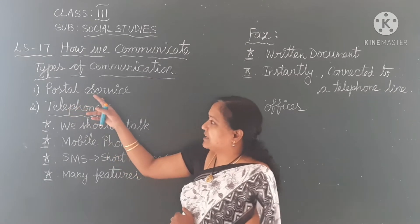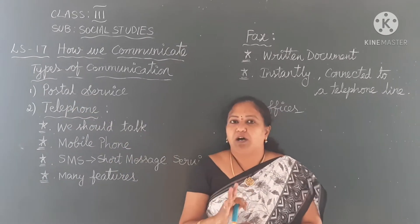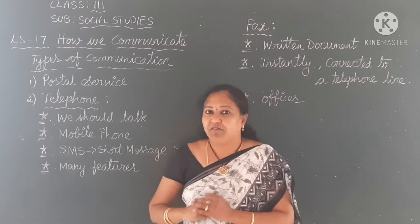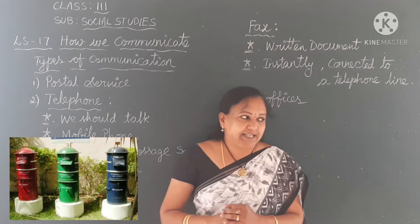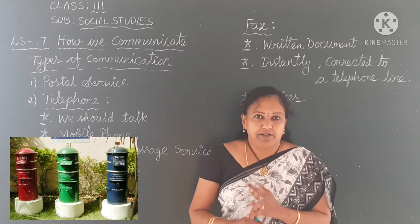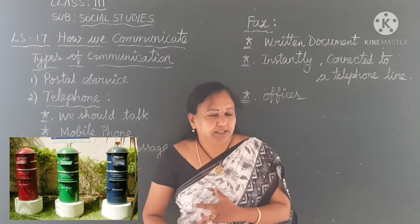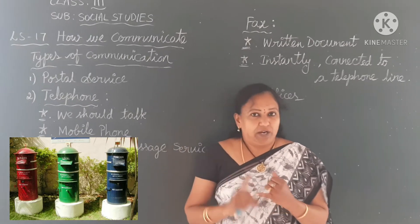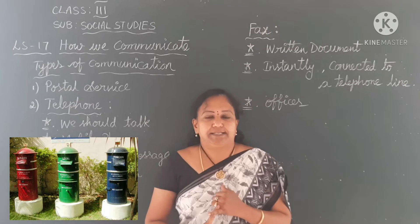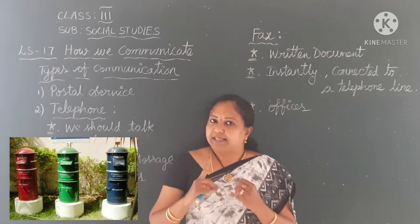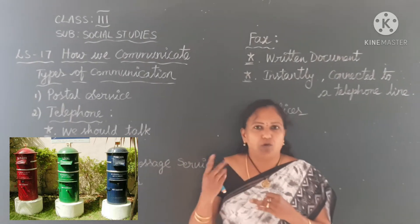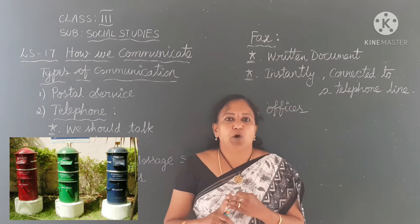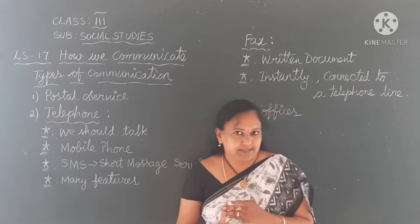In the postal service, we have already seen in the textbook three types of post boxes. One is green color, another one is red color, and the third one is blue color. One is used for local letters, second one is used for letters going out of the country, and the third box is used for parcels.